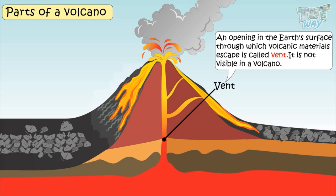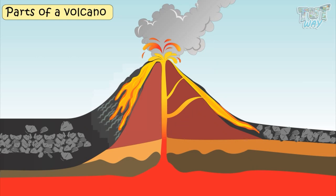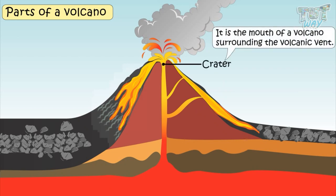A vent is not visible in a volcano. The visible opening is called a crater. It is the mouth of the volcano, and the crater surrounds the volcanic vent.